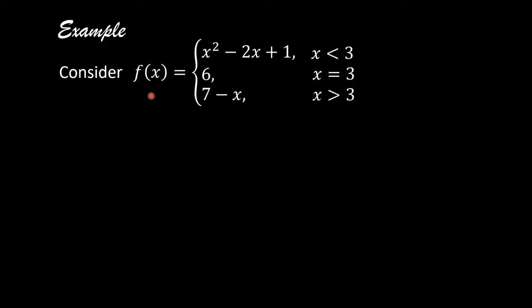Example: consider f of x equal to x squared minus 2x plus 1 if x is less than 3; equal to 6 if x is equal to 3; and equal to 7 minus x if x is greater than 3.